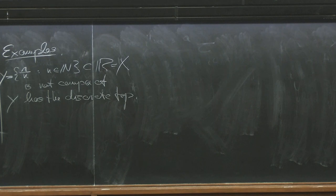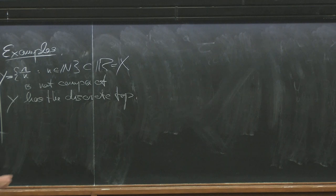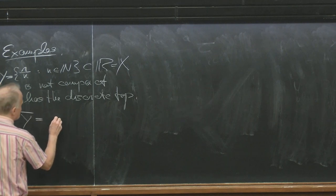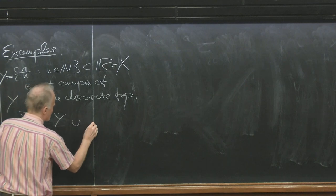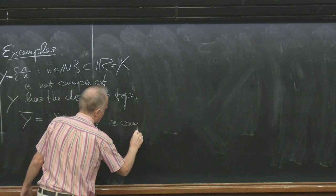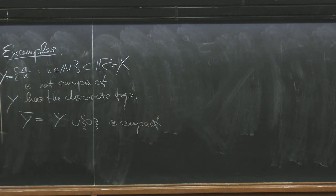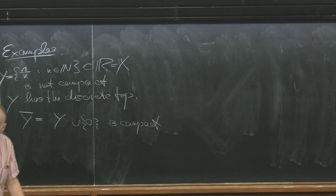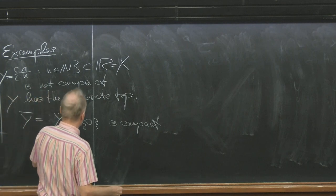A discrete space: points are open. So we take points as open sets. A finite sub-covering means we have only finitely many points. Y has a discrete topology — it is not compact. For the analysis side, you take the closure: Y-bar = {1/n} ∪ {0}. That should be compact.